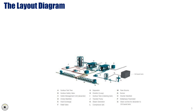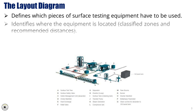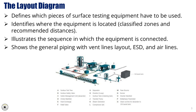The layout diagram serves several important purposes in well-testing. It defines which pieces of surface testing equipment have to be used. It identifies where the equipment is located in accordance with classified zones and recommended distances. It illustrates the sequence in which the equipment is connected, and shows the general piping with vent lines layout, ESD, and air lines.